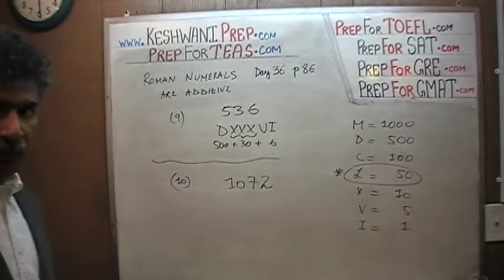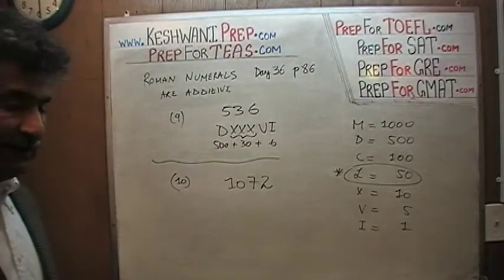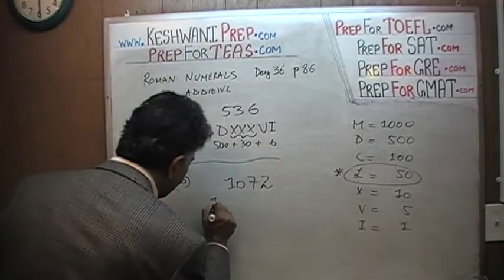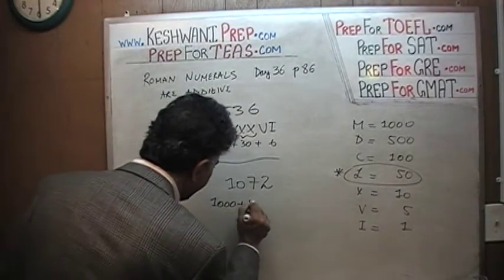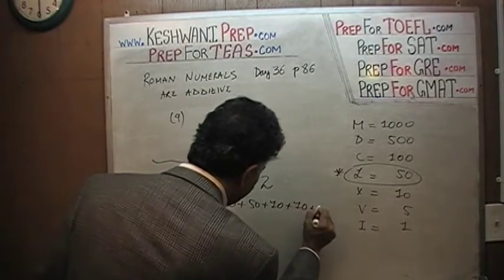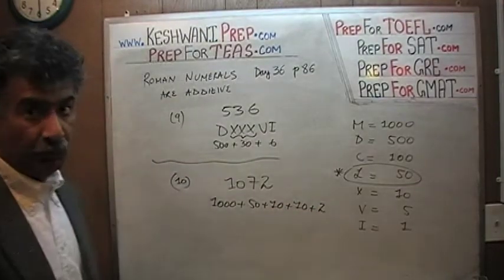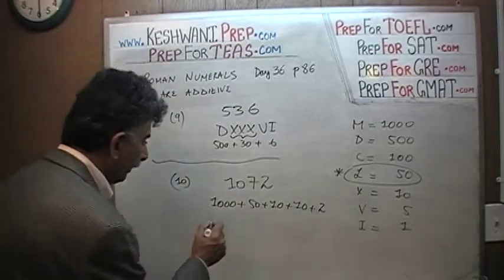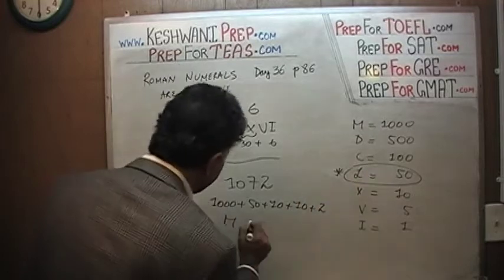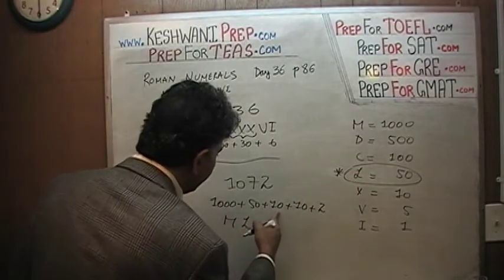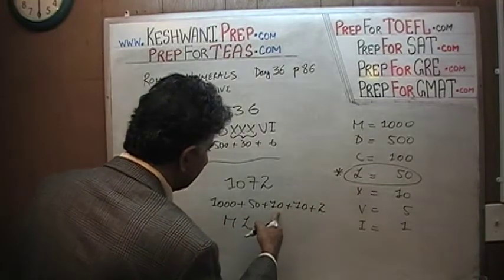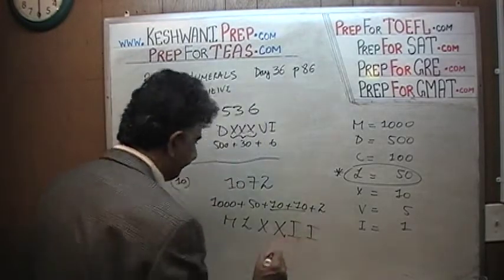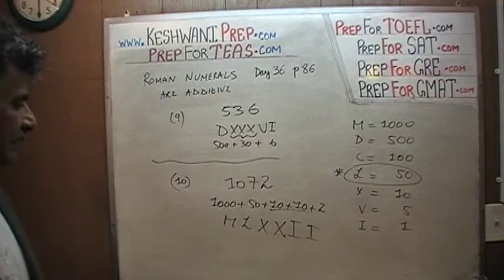Each time, pause the video if you want to as soon as I finish writing the number. Number ten: one thousand and seventy-two. That would be written as one thousand plus fifty plus ten plus ten plus two. M for one thousand, then L for fifty, then X, X for twenty more to reach seventy, and then two — which is I, I. One thousand and seventy-two.